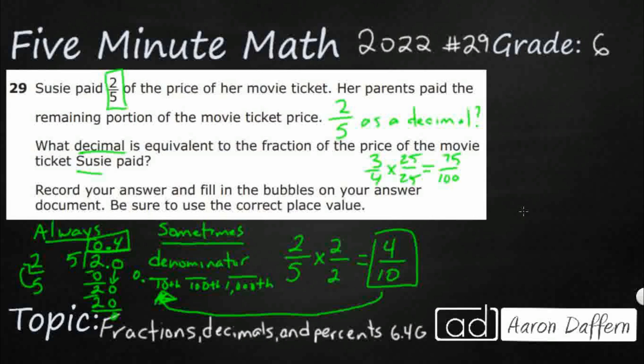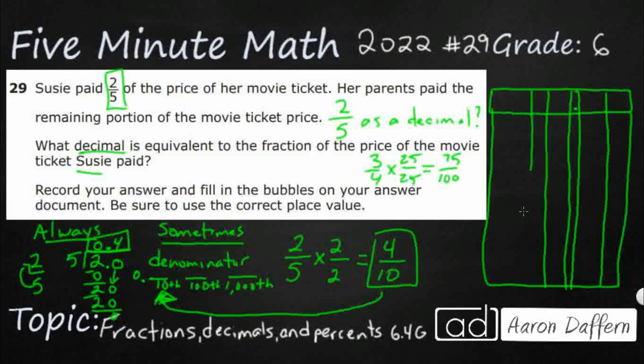So that's my answer, 0.4, but we need to bubble it in correctly. So here, let's look at our answer document. We're going to get a long, thin column with no bubbles underneath it. That's our decimal point. We get two digits to the right of the decimal. We end up getting four digits to the left. I'm just going to squeeze them in here. And then we also get a positive negative. We don't really need that at this point. So we're looking for 0.4. So we're just going to bubble in the 4 right there. You don't really need to bubble in any zeros on either side. That's your answer, 4 tenths.